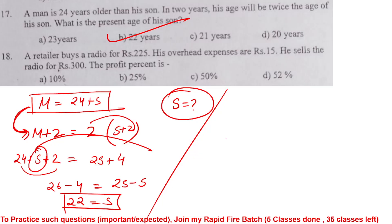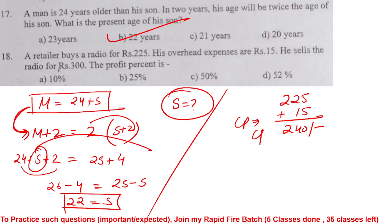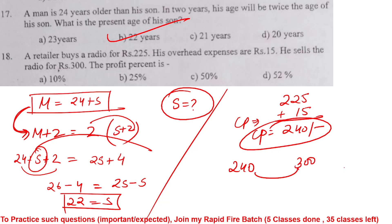A retailer buys a radio and with overhead expenses the cost price becomes 240. He sells it for a higher amount. Profit percentage calculation gives 25 percent as the correct answer.